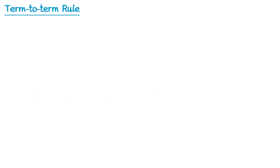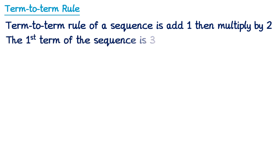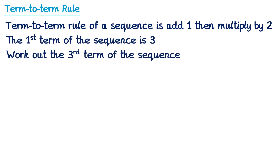Sometimes we have a term-to-term rule that comes in more than one part. For example, in this one the term-to-term rule is add 1 and then multiply by 2. We're told the first term is 3, and we need to work out the third term. So we just need to be careful this time and remember that the term-to-term rule is in two parts: add 1, then multiply by 2.